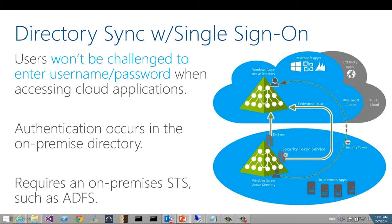To support the trust relationship between the on-premise directory and Windows Azure Active Directory, a security token service, or STS, must be deployed next to the on-premise directory to handle the WS federation protocol. In a Microsoft environment, this STS will likely be Active Directory Federation Services, also known as ADFS, but it could also be a supported third-party STS, such as Shibboleth.